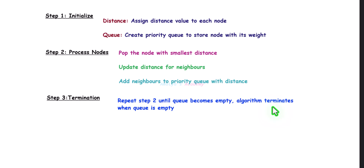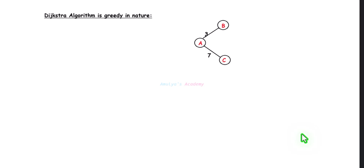Dijkstra's algorithm picks the node with the smallest distance first and processes it. For example, after visiting A, this algorithm will process node B because it has the smallest distance of 3, and after that it will visit C. Dijkstra's algorithm makes a greedy choice of picking the node with the smallest distance at each step. For this purpose we use a priority queue instead of a normal queue — this is Dijkstra's algorithm's greedy nature.